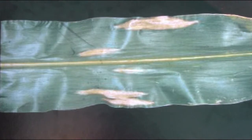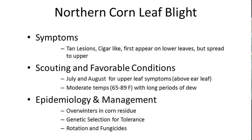As far as some favorable conditions and scouting time for northern corn leaf blight, the months of July and August are the best time to see this disease, with moderate temperatures from 65 degrees to 89 degrees Fahrenheit along with long periods of heavy dew.